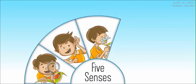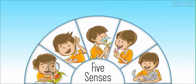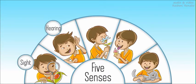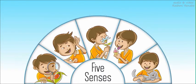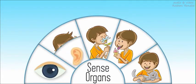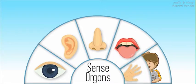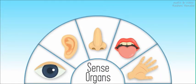Hey kids, today we will learn about the five senses and corresponding sense organs. We have five senses: sight, hearing, smell, taste, and touch. We use different parts of the body to sense the world. We call them sense organs.